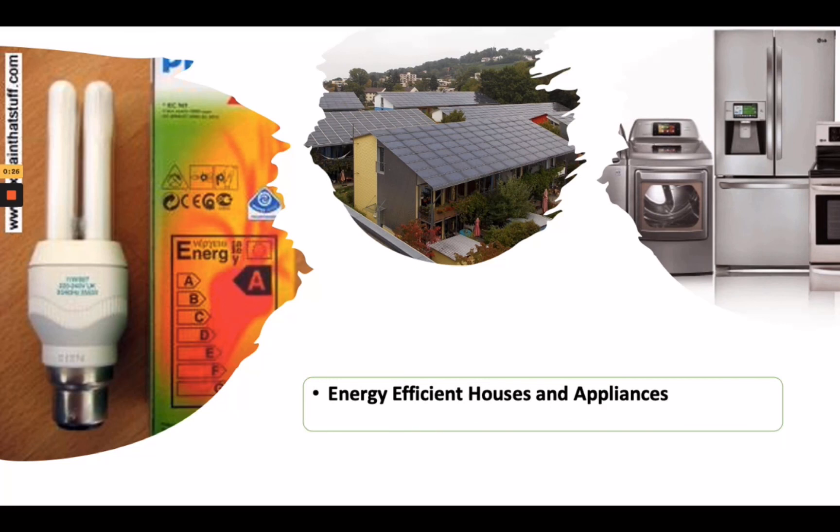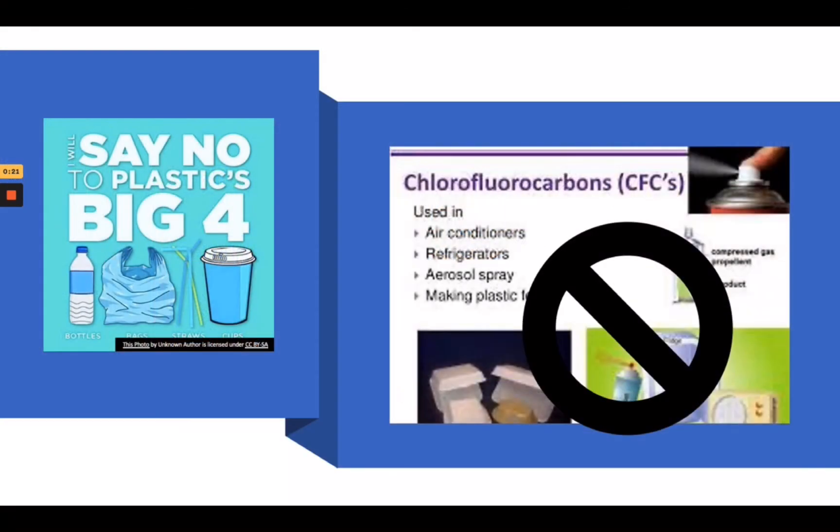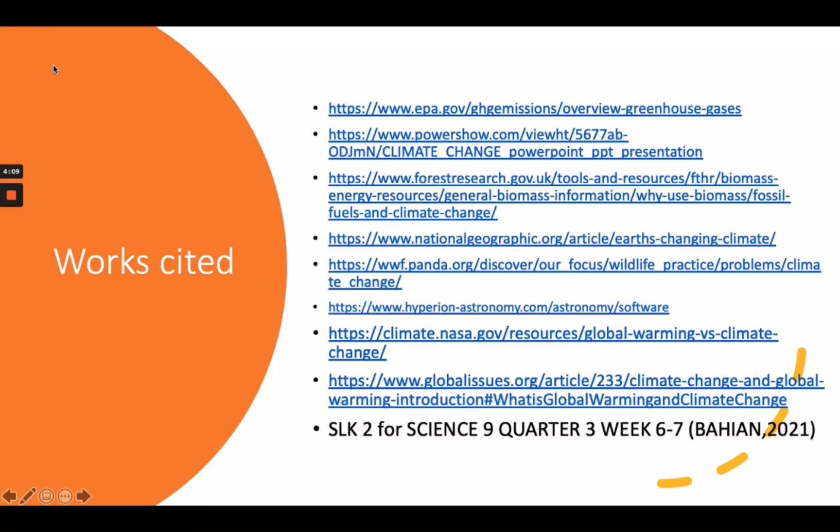Use less electricity by making sure you have energy efficient houses and appliances. Plant a tree. Trees absorb carbon dioxide, keeping it out of the atmosphere. Say no to plastics and chlorofluorocarbon products. And of course, don't forget the three R's: Reduce, reuse, and recycle. Eat less meat. Cows are one of the biggest methane producers. It is very important for us to be watchful. Let's help the future generation to enjoy the things we have today. Aim for sustainable development.